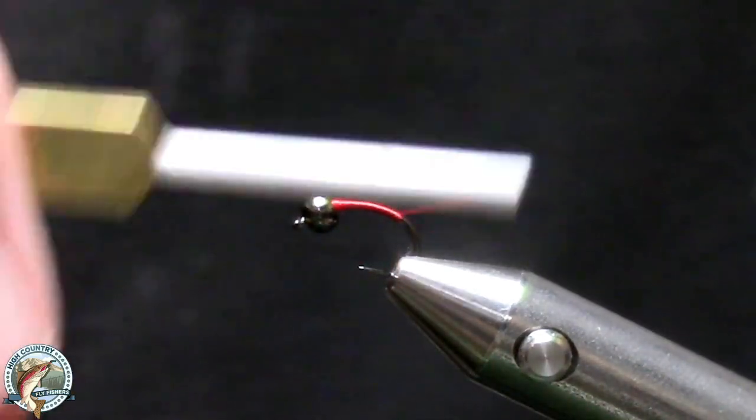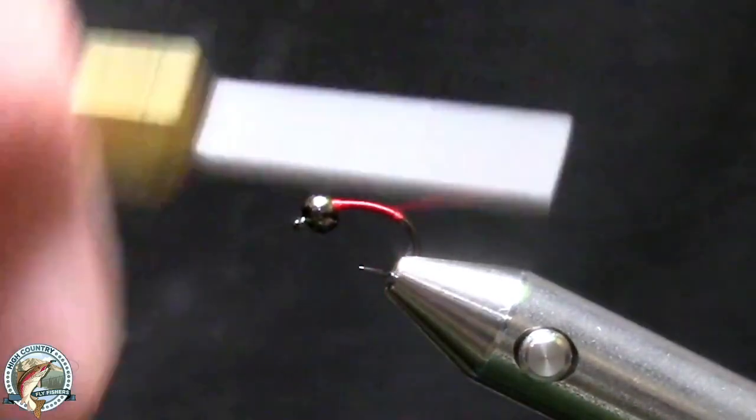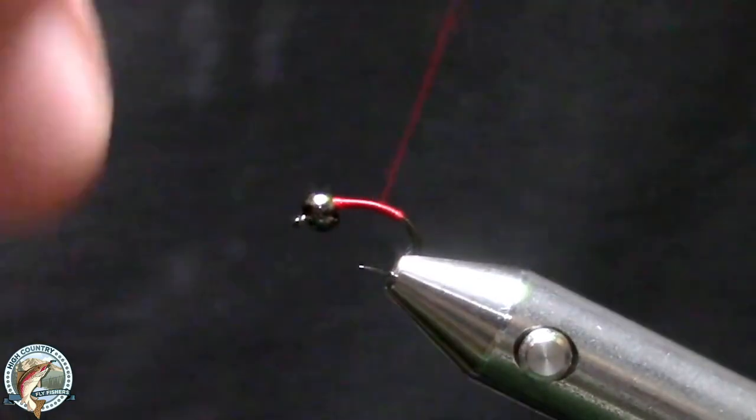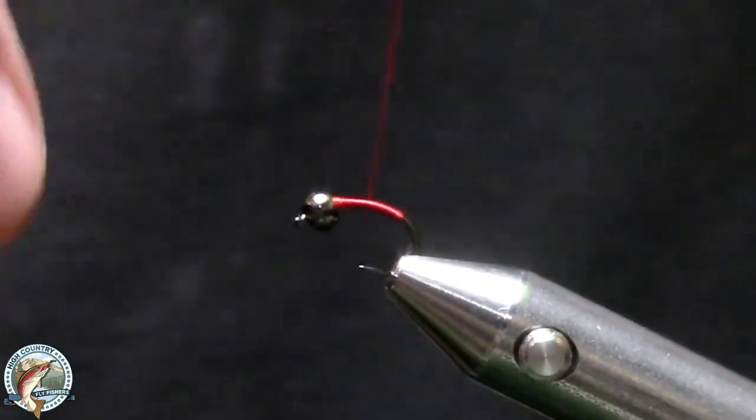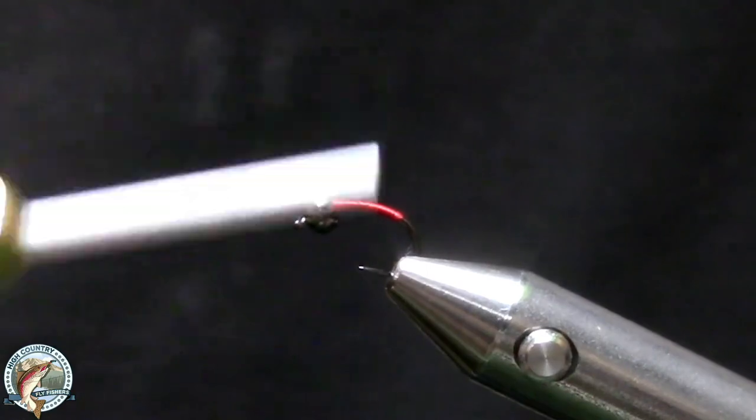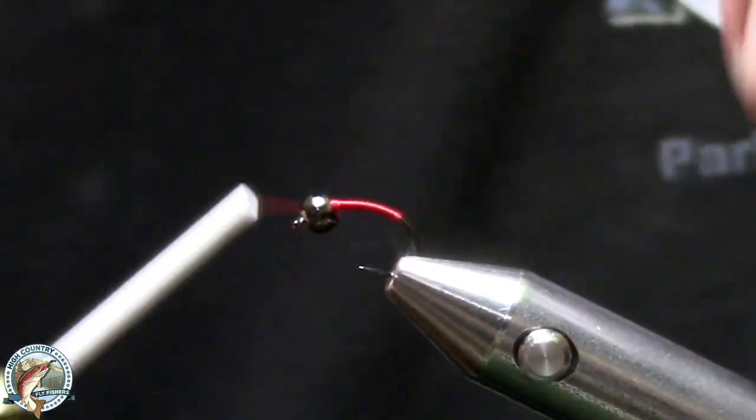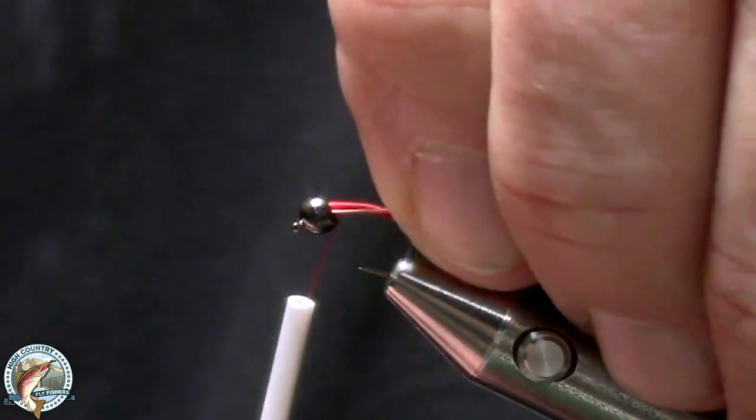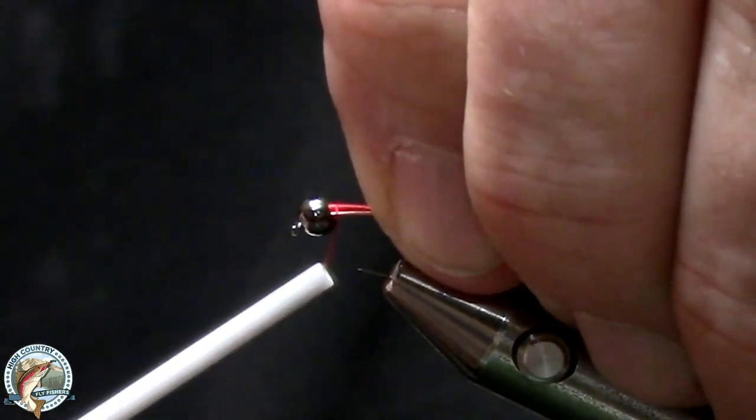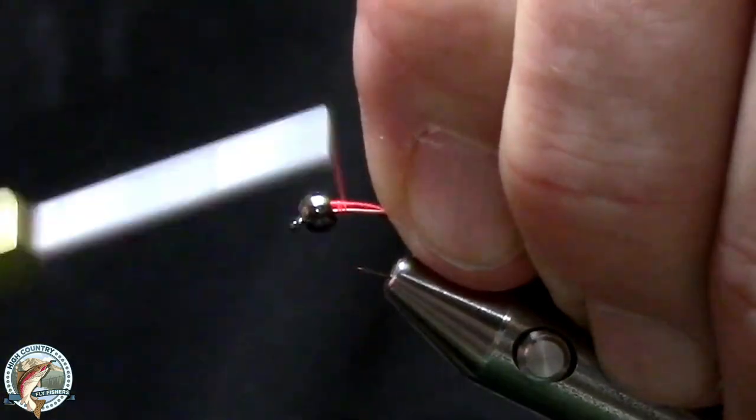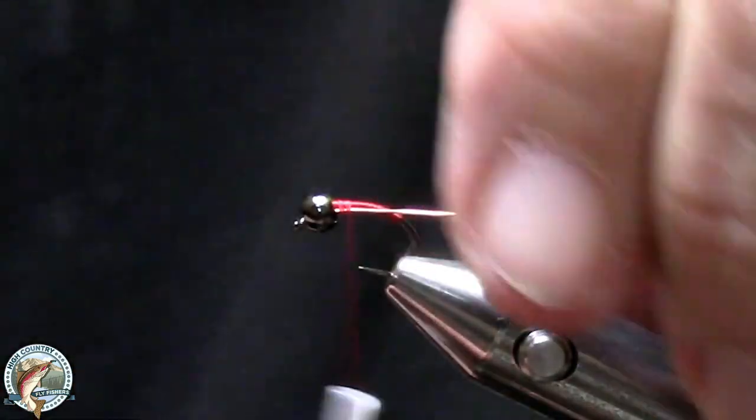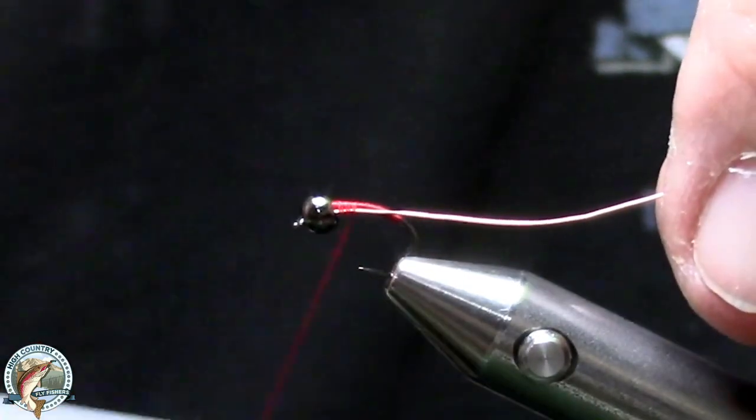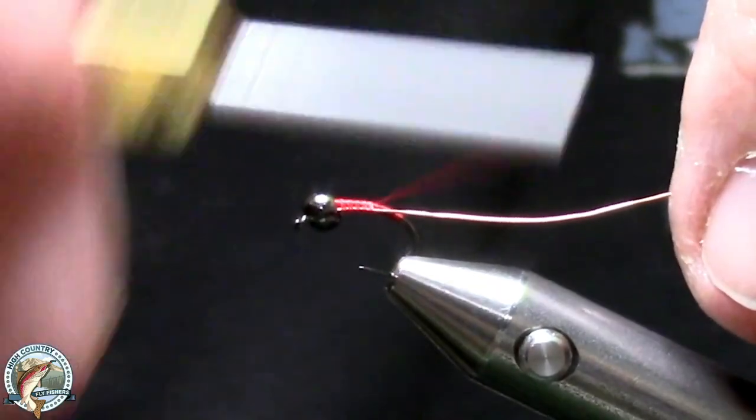I'm going to bring my thread back up because in order to create a body on this fly, I've got to have a few layers. Now I've basically got two layers of thread. I'm going to put the wire right into the back of the bead. I'm going to flatten my thread. I'm going to be very mindful of keeping your thread flat.